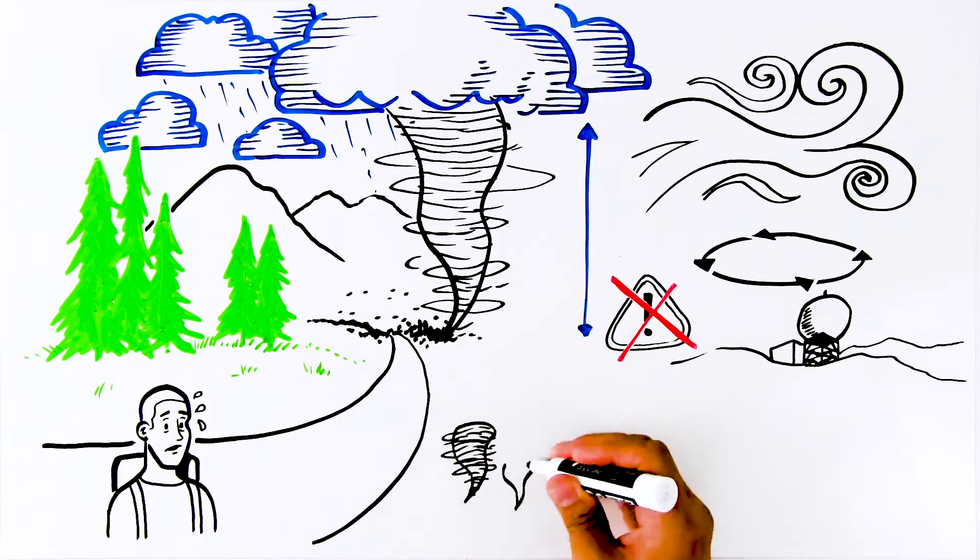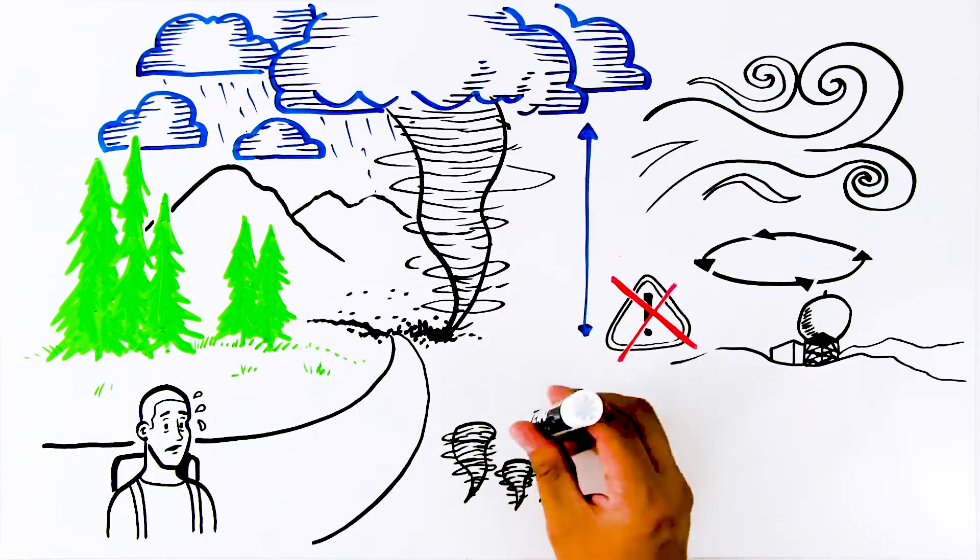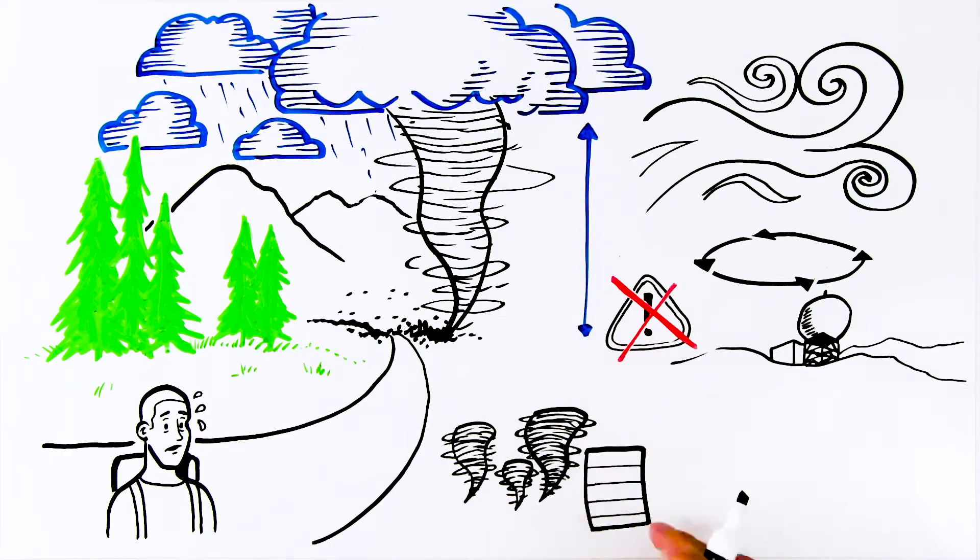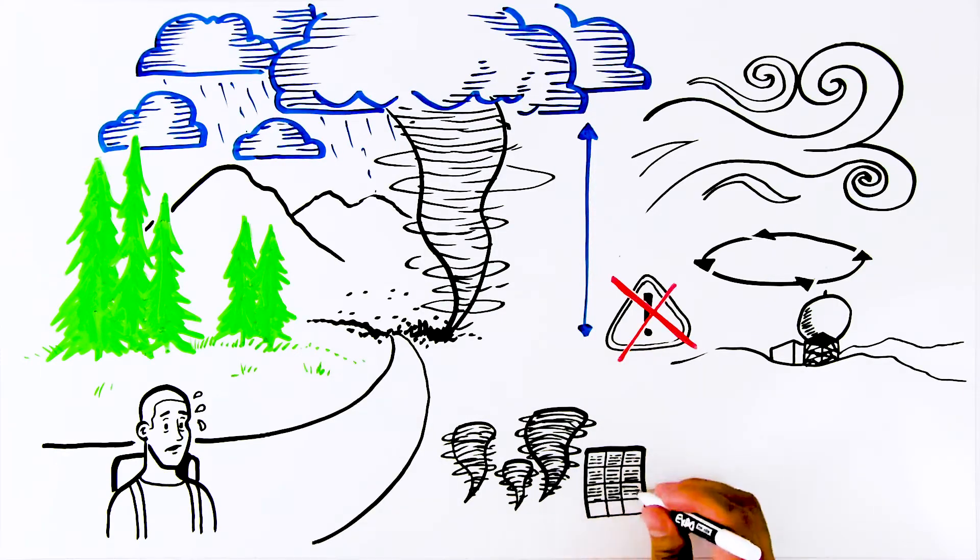Washington averages between two to three tornadoes per year, occurring most commonly in April, May, and June, but can occur any time of year.